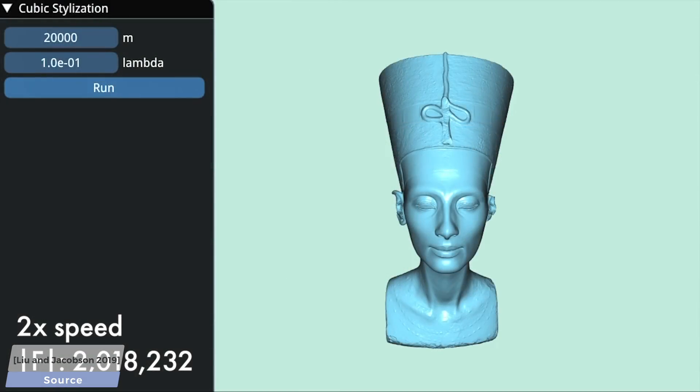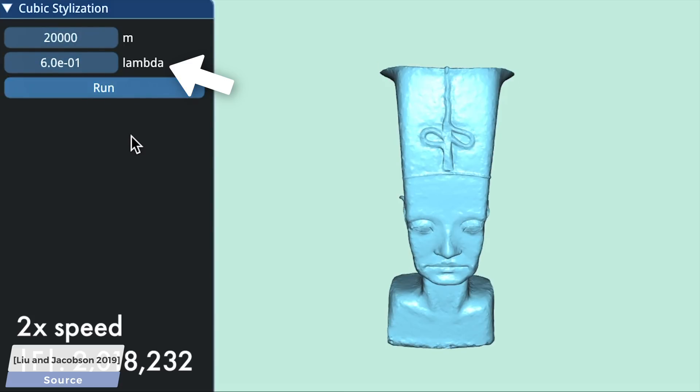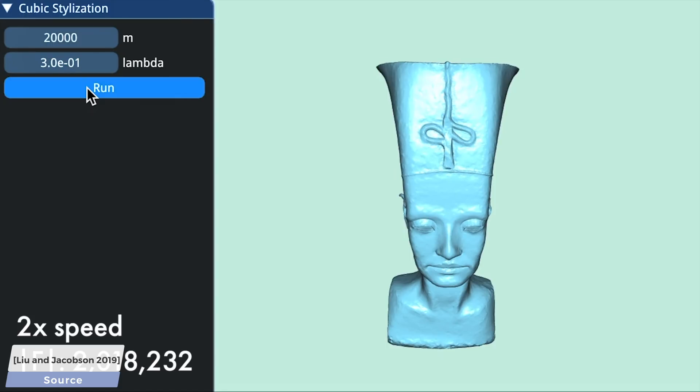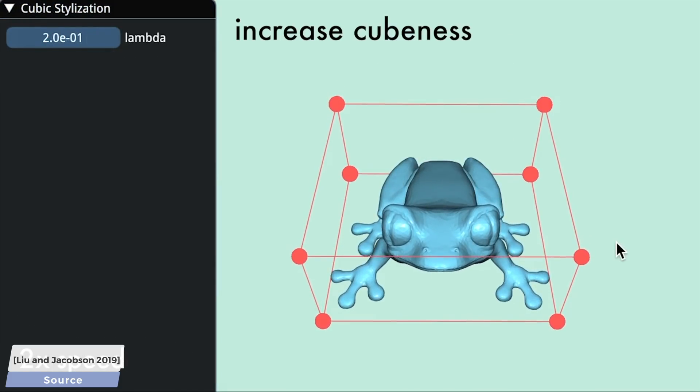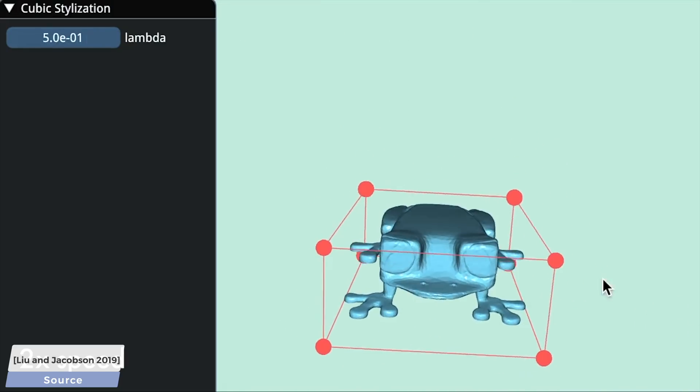Five, it is fast and works on high resolution geometry, and you see different settings for the lambda parameter here that is the same parameter as we talked about before, the strength of the transformation. Six, we can also combine many of these features interactively until a desirable shape is found.